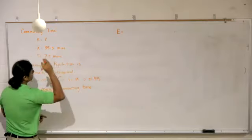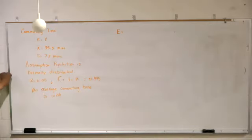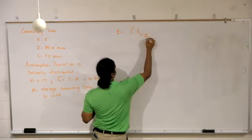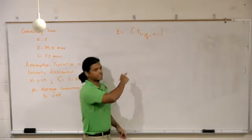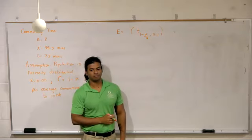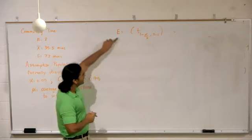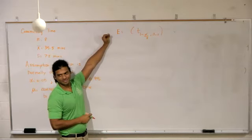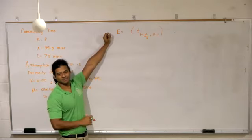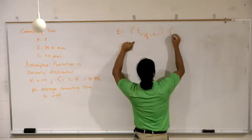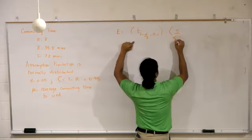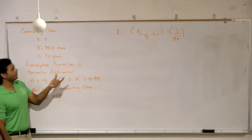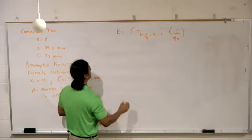We have x bar so we can jump directly into finding the margin of error, which is always the product of two things. The critical value multiplied by the standard error, which is s over square root of n. We know s, we know n, we just have to find the critical value.